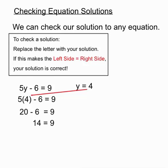When we complete the calculation of the left hand side, we realize that our solution has made the left hand side equal 14, and the right hand side equal 9. Obviously not mathematically correct. So my solution, or our solution of y equals 4, has made the left hand side not equal the right hand side.